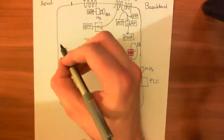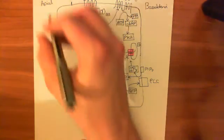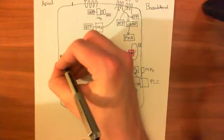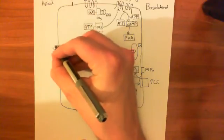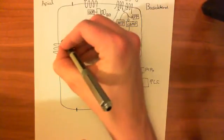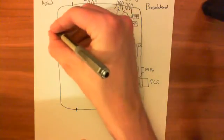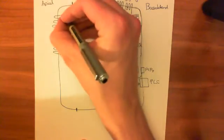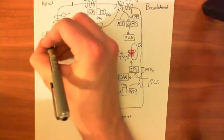Now let's put in the cystic fibrosis transmembrane conductance regulator, which is on the luminal — apical — side of the membrane. So let's draw its structure: it has the first transmembrane domain with six membrane-spanning alpha helices, then nucleotide binding domain 1 (NBD1), then a regulatory domain, then transmembrane domain 2, ending with nucleotide binding domain 2. This picture is representing our CFTR.